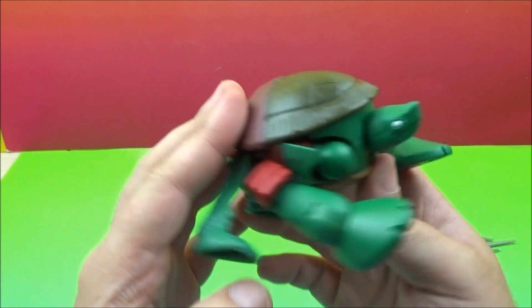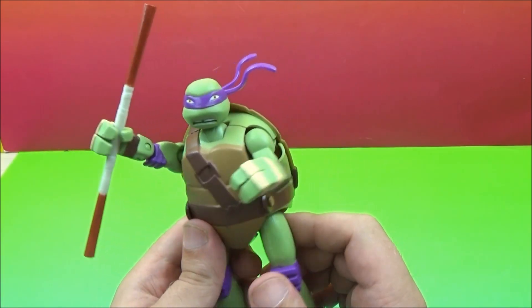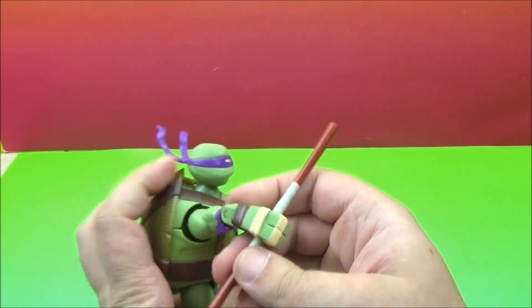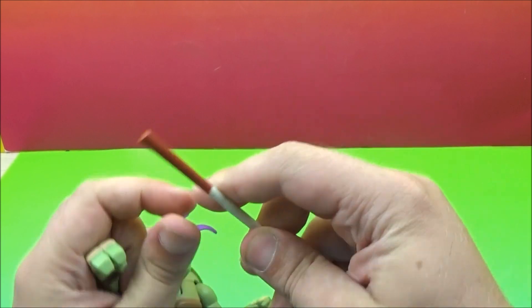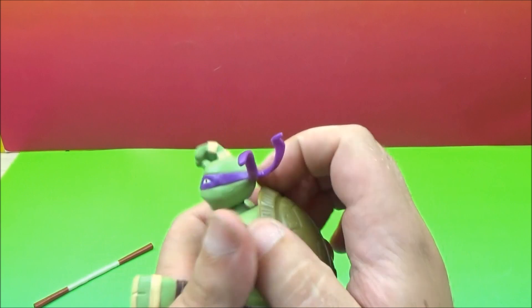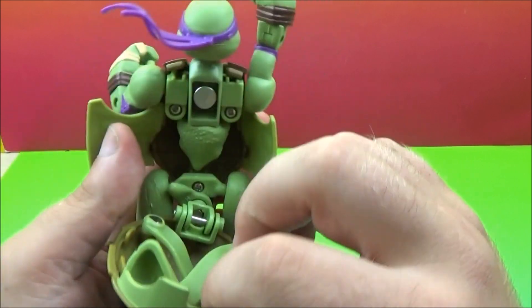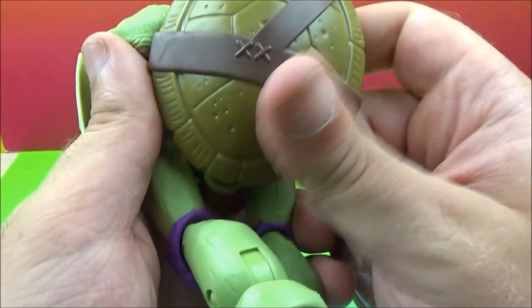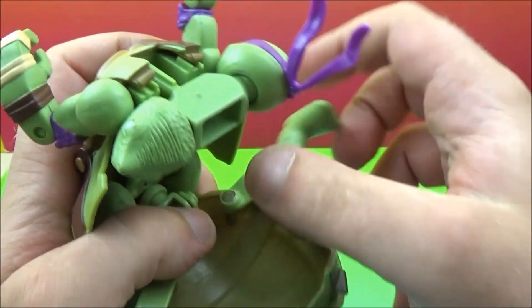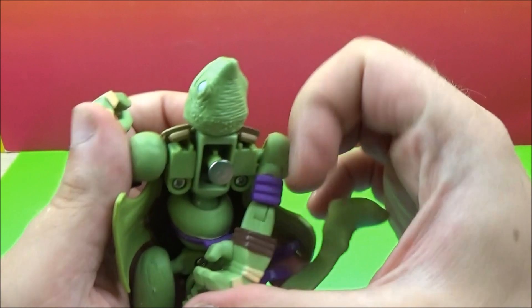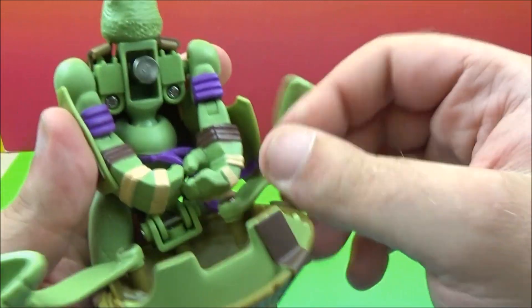Next up we have Donatello. Look at that nice purple color going on there. And of course he has the bo staff. This one is a little bit flexible. Get him transformed into his pet. Take this out here. Turn that tail, get all the way around there. Get our legs out. There we go, head in there. Get the arms back there.